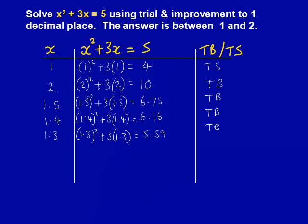1.3 gives us the answer of 5.59. This is getting closer to the answer, but it's still too big. Therefore, we will try 1.2. 1.2 gives us the answer of 5.04. This is very close to the answer, but it's still above 5. Therefore, it's too big.